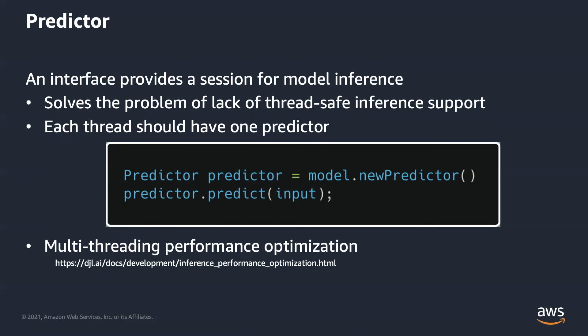Creating a predictor is simple — just call model.newPredictor, then run the predict method to get the output. To optimize multi-threading performance, you can find more details in our documentation. We will dive into this topic in another video.